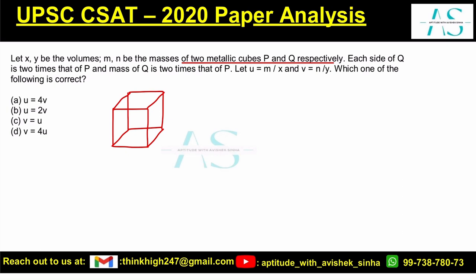Let's say this is P cube and each side of Q is two times, so we have a larger cube here which is Q basically.